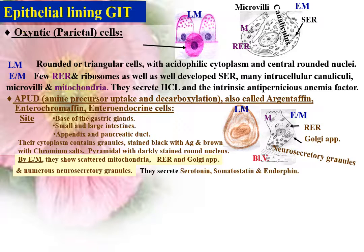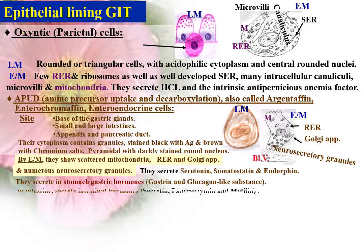In the stomach, APUD cells secrete gastric hormones — gastrin and glucagon-like substance — while in the intestine, they secrete intestinal hormones: secretin, pancreozymin, and motilin.